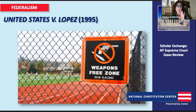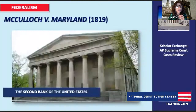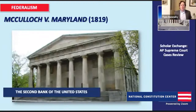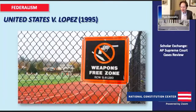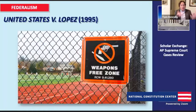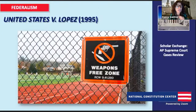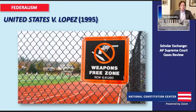McCulloch v. Maryland was decided unanimously, which is true of almost all cases in the Marshall Court, though the debate continued politically on both sides. United States v. Lopez was decided 5-4.